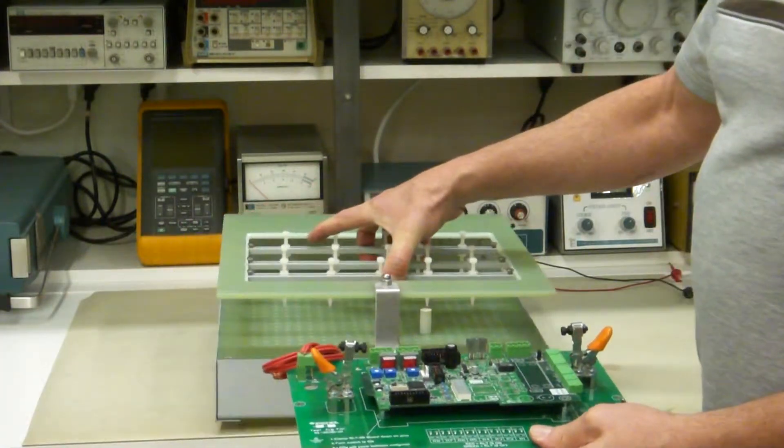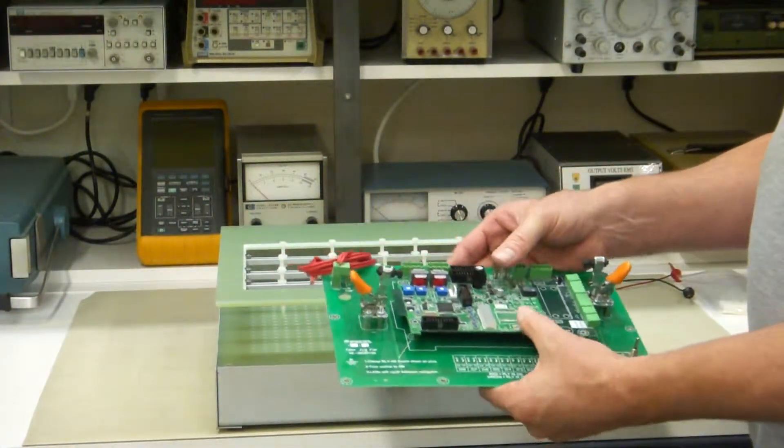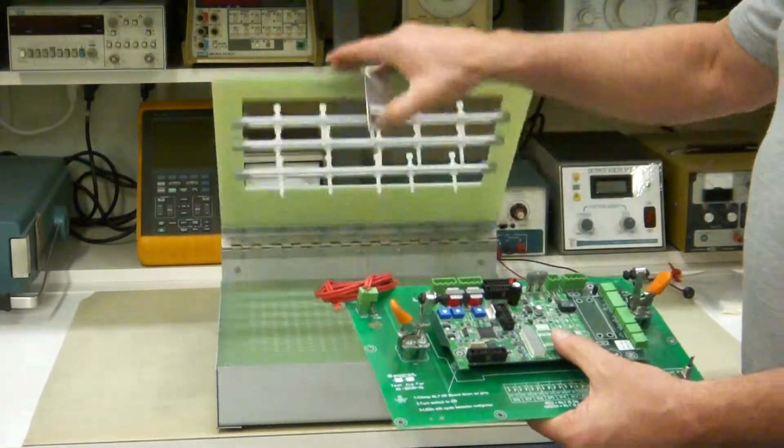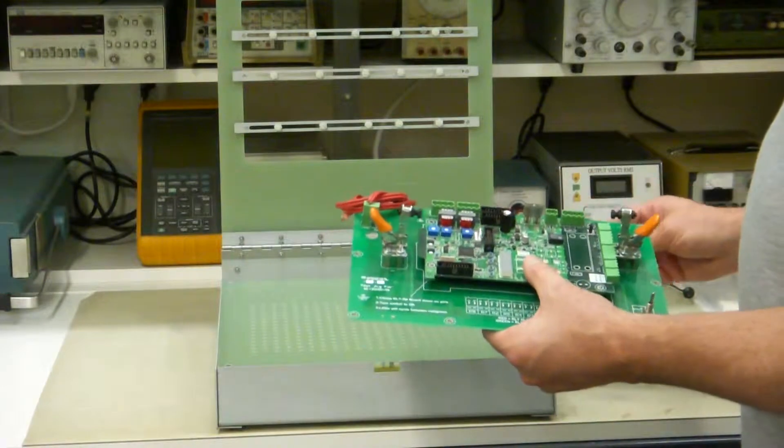But we're going to pretend like we didn't know about Test Electronics and we didn't design this to fit. So we're going to use this round peg and hole type test fixture to test this board.